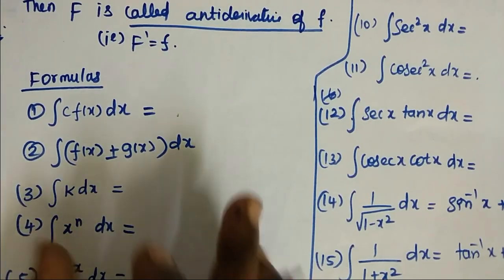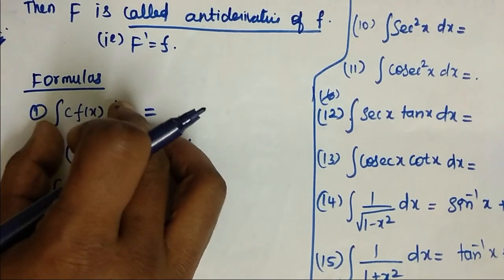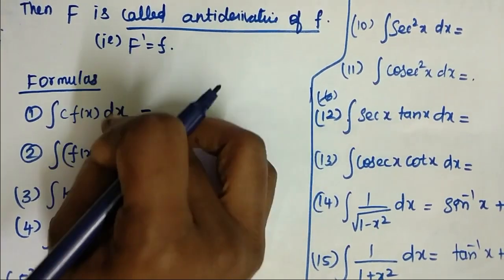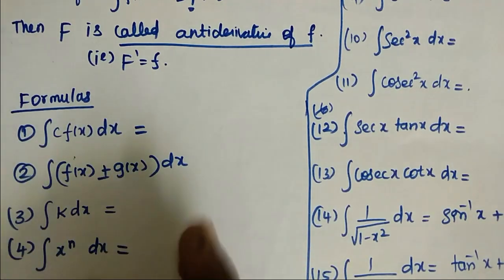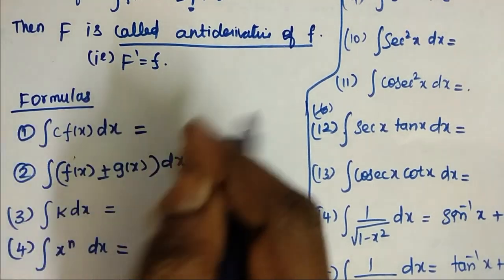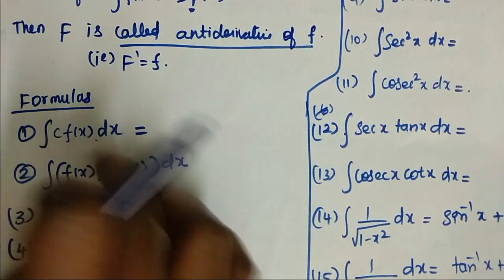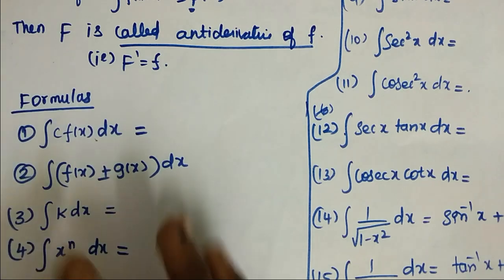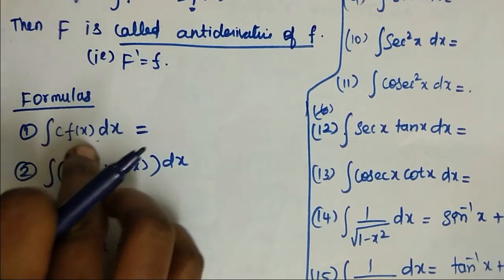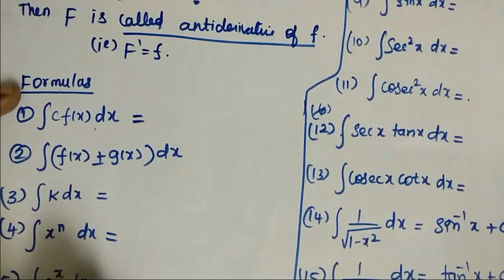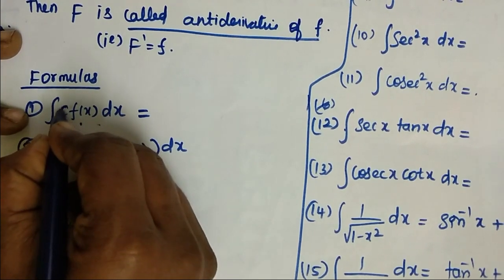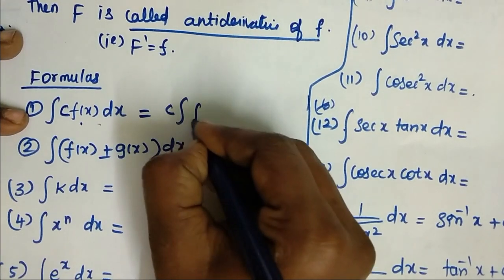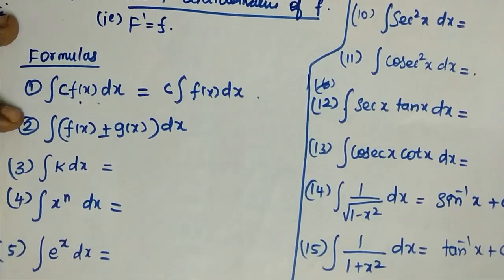Anyway, if we look at the formulas — if we integrate a function and differentiate the answer, we will get back the question. This is the Fundamental Theorem of Calculus Part 2. You can see Part 1. If we integrate a function, we integrate the constant into the function. This is the first property.